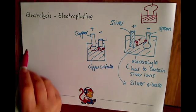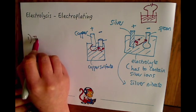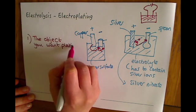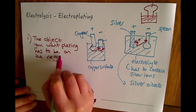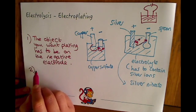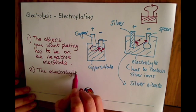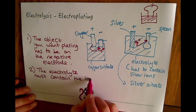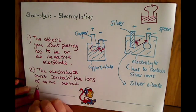So the couple of key points that we need to make sure we're doing when we're talking about electroplating. First of all the object that you want plating has to be on the negative electrode and secondly the electrolyte must contain the ions of the metal you want to plate with.